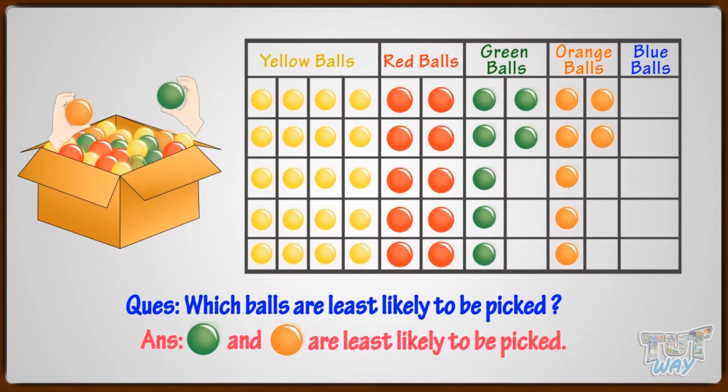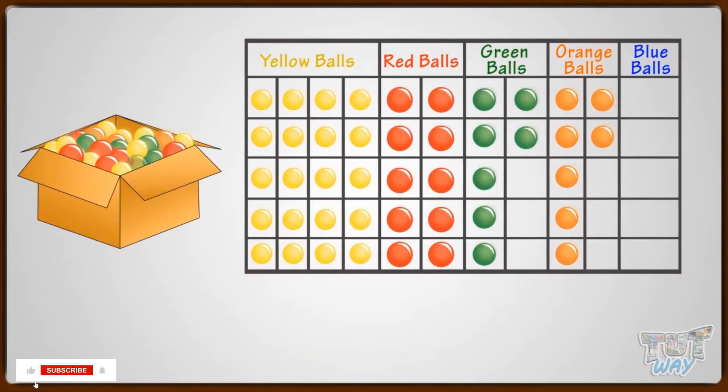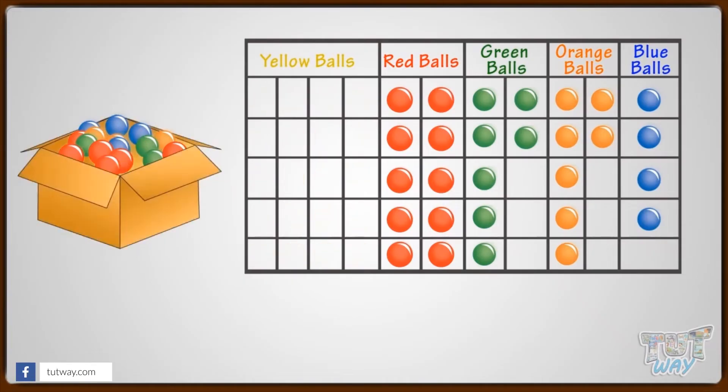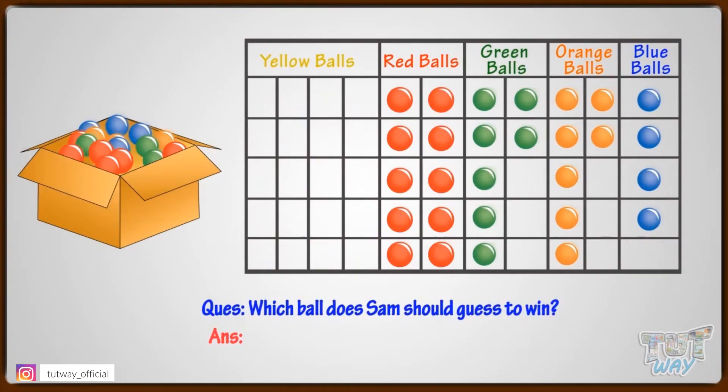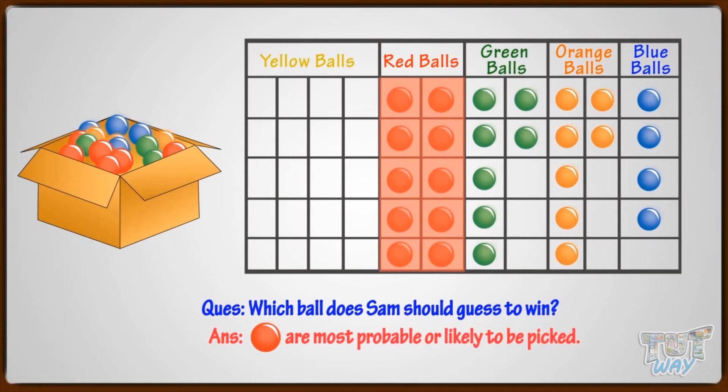Now, let's answer one more question. If all the yellow balls are removed from the box, which ball should Sam guess to win in the game of picking the same ball without looking? Red ball. As red balls are most in number, so they are most probable or likely to be picked. So, Sam should guess the red ball to win if all yellow balls are removed from the box.